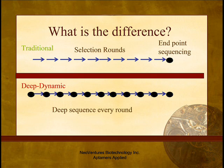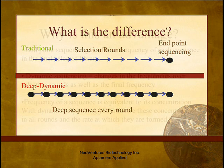With the new deep dynamic sequencing, we have the capacity to sequence multiple rounds from the selection process simultaneously for the same cost. This means that we have not only more sequences to analyze from the last round, but also sequences from every selection round on the path.